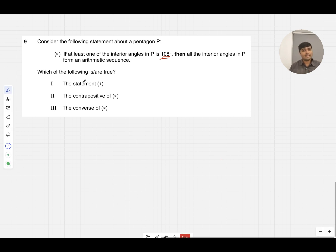Let's draw out an angle with 108 degrees. Do we need all the other interior angles to form an arithmetic sequence? The answer is no. You can easily construct a counterexample by just making two of the remaining angles the same.